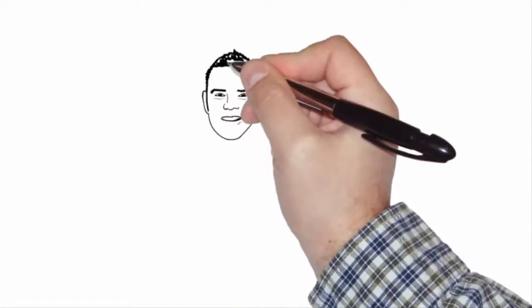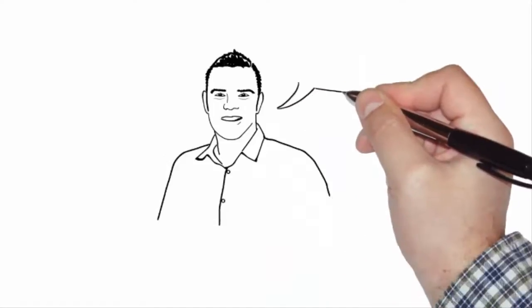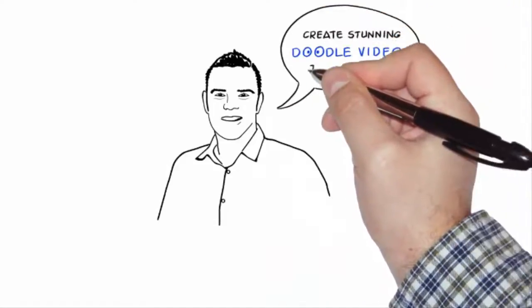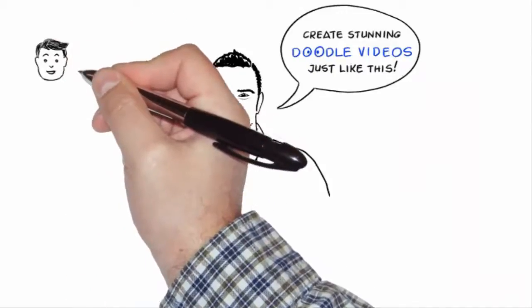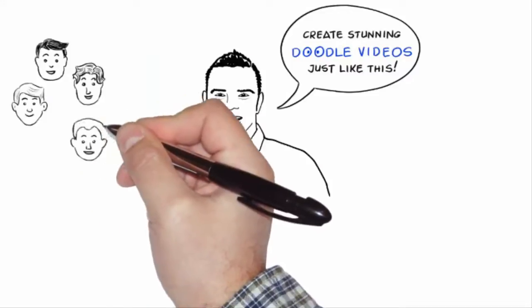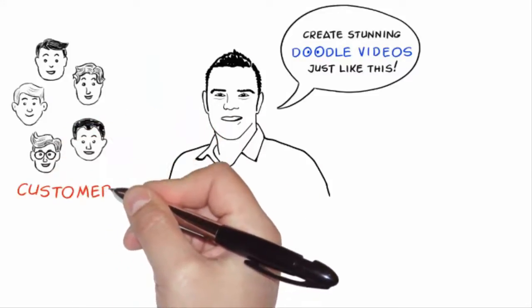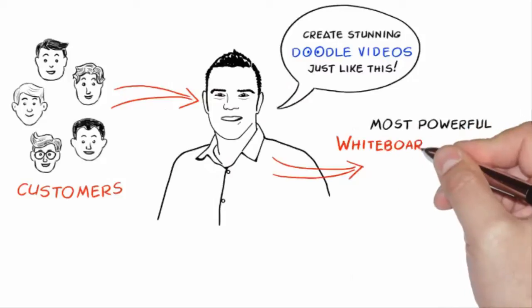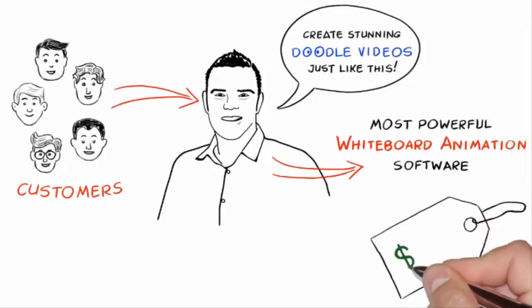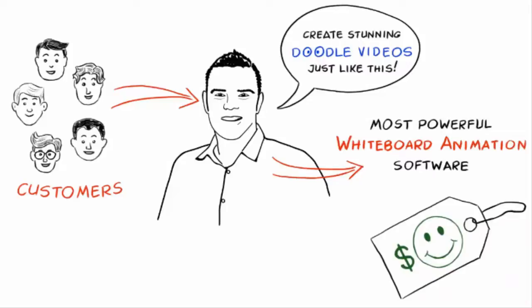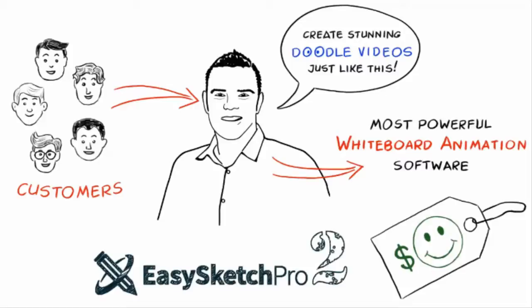I nearly forgot to mention that of course with EasySketch Pro 2 you can simply create stunning doodle videos just like the one you have been watching. So there you have it guys — me and my team have really listened to our customers to produce what can only be described as the most powerful whiteboard animation software you will find anywhere in the world today. Grab this now for the ridiculously low price we have put on this before the price increases, because without EasySketch Pro 2 in your marketing efforts you are simply looking at being left behind.